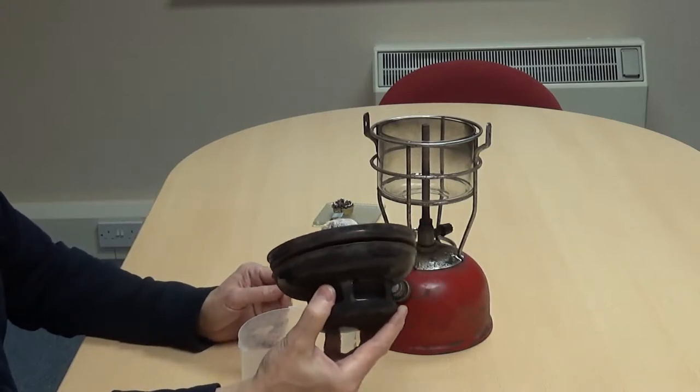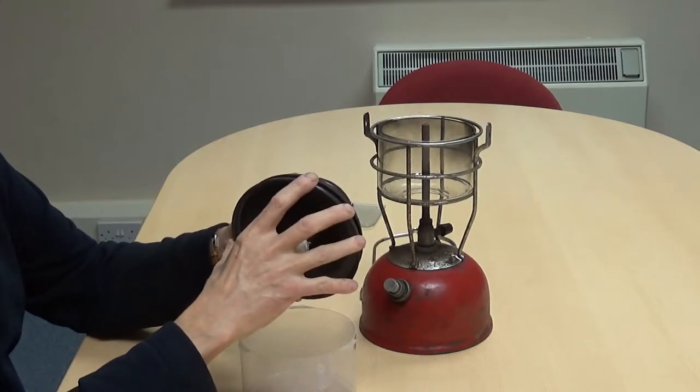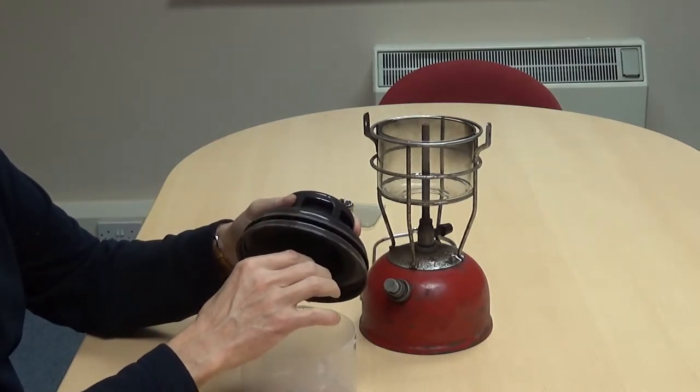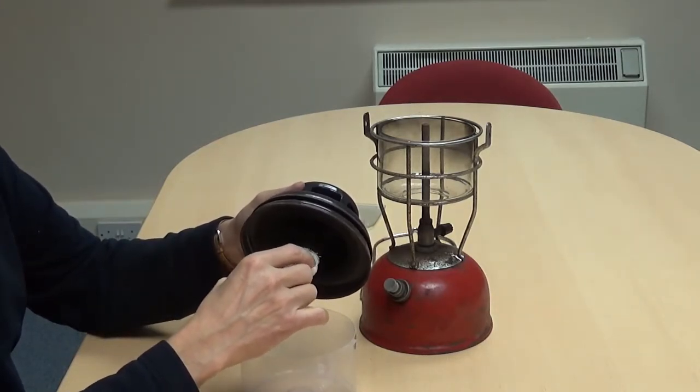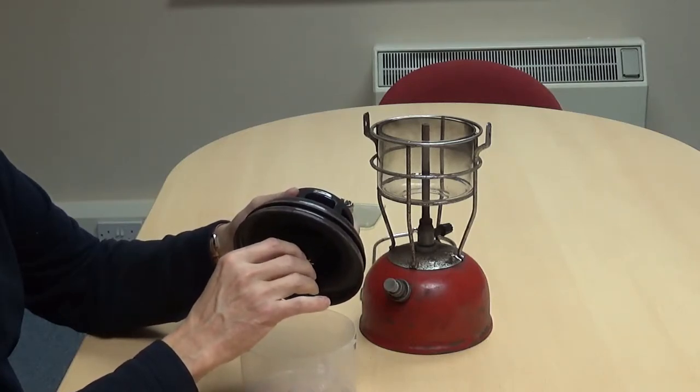The first thing to do is to remove the old one. In service these things get very delicate and brittle once you light them for the first time. So you're just going to break that off.